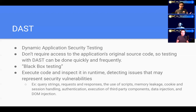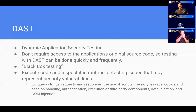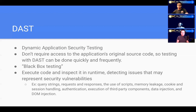Basically, you execute the code and inspect it during runtime, detecting issues that may represent security vulnerabilities, such as query strings, requests and responses, use of scripts, memory leakage, cookie and session handling, authentication, and a whole bunch of other security vulnerabilities. For example, your application at runtime may leak memory or not use memory efficiently — that's what DAST would cover. It also covers SQL injections in case you're handling special user input.